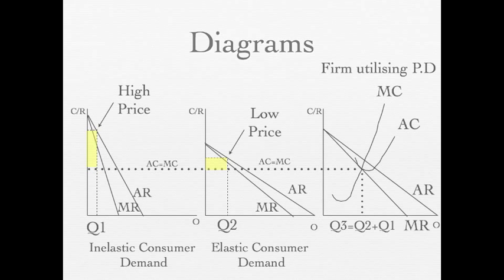To demonstrate price discrimination on a diagram, three diagrams should be drawn. The first two show how consumer surplus is converted into profit — by charging a higher price when demand is inelastic and a lower price when demand is elastic. The last diagram shows the monopoly firm where MC equals AC and hence the profit made from the two different consumer groups. The yellow area represents the profits made in each market.